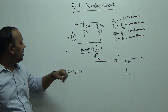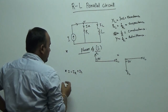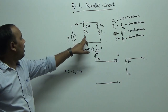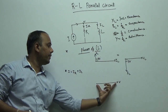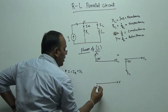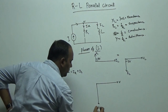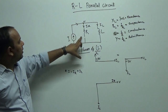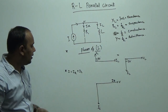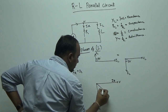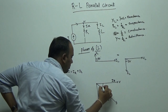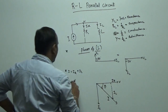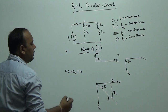So I is equal to IR plus IL in parallel. If we draw the phasor diagram, V is the same for R and L, so we take V as the reference x-axis. Then IL is in the direction of negative 90 degrees, and IR is in the same direction as V since voltage and current are in phase in a resistor. The resultant is I, and the angle from the reference is theta. This forms the current triangle.